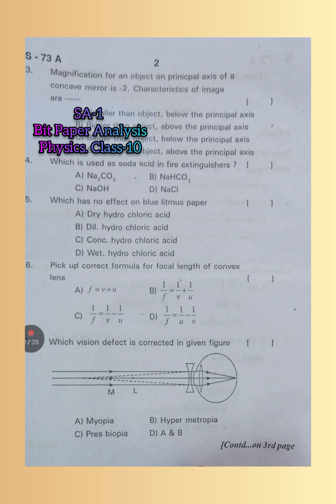Which is used as soda acid in fire extinguishers? In fire extinguishers, sodium carbonate Na2CO3 is used. So A is the right answer.